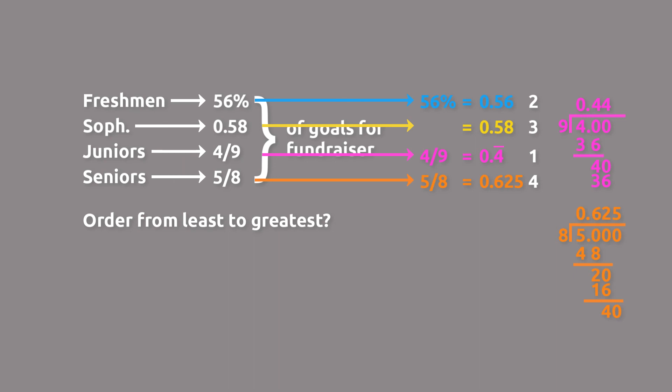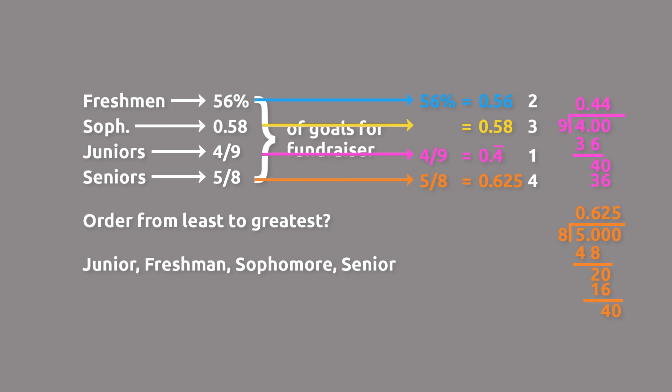Looking at which value corresponds to each class: juniors have fared the worst so far, then 2 is freshmen, 3 is sophomores, and the group that has fared the best is the seniors with 0.625 of their goal. So in order from least to greatest proportion toward their goal, the order is: juniors, freshmen, sophomores, then seniors.